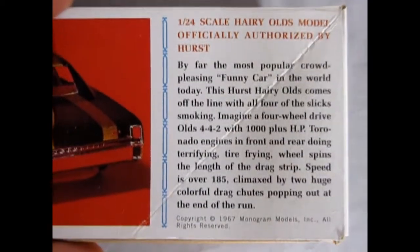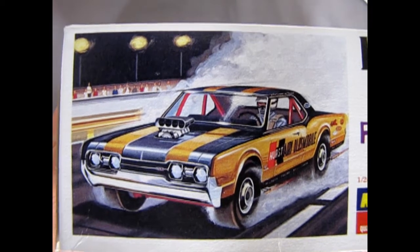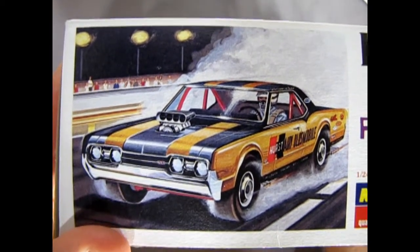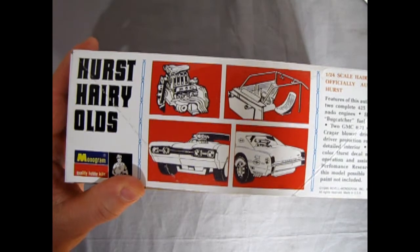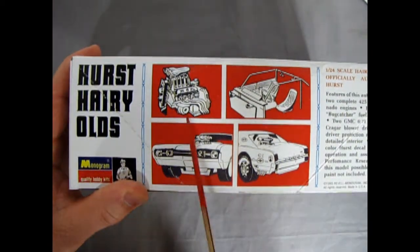All right let's just zoom back out here. Turn the box on this end. Of course we get treated to the wonderful cartoon illustration of the thing going down the track with all four tires smoking! There's our cartoon side view and then you can see the Tornado engines.